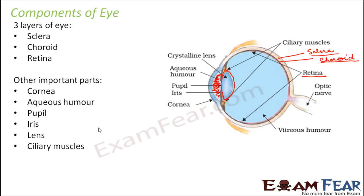Ciliary muscles — these are the muscles present here on both sides of the lens. Here you can see some yellow colored muscle-like structures. These are the ciliary muscles which actually help to keep the lens in place and control the position of the lens. Next is the vitreous humor — that is the fluid which fills the entire space inside the eye behind the lens and the retina. In between there is nothing, only a gel-like fluid, and that gel-like fluid is known as vitreous humor.